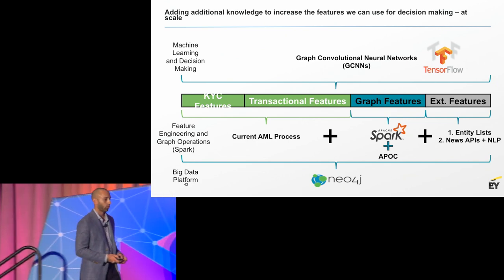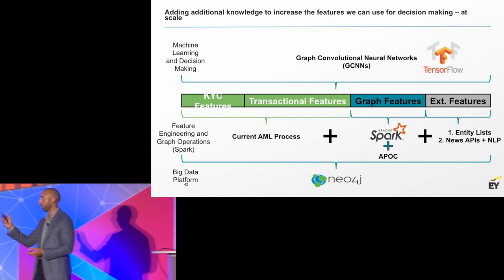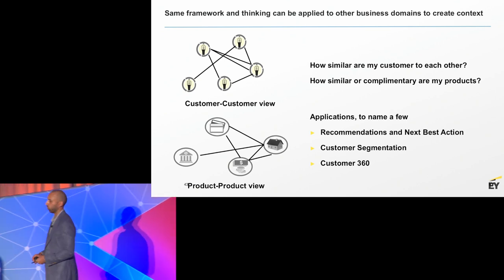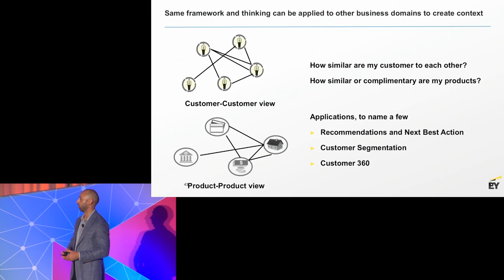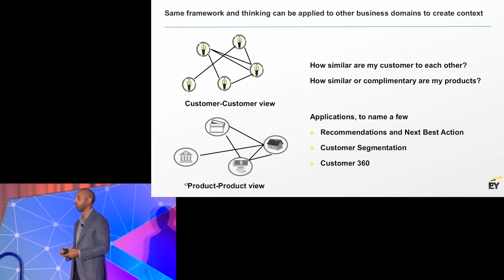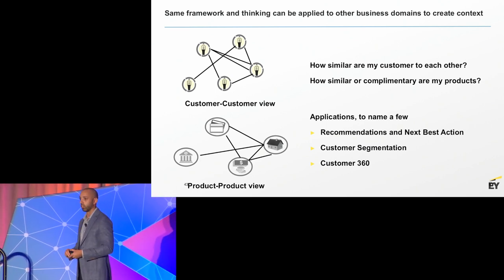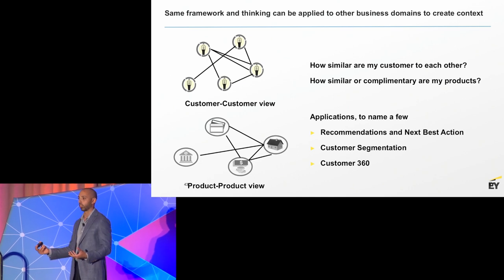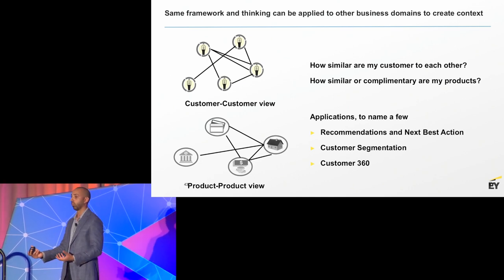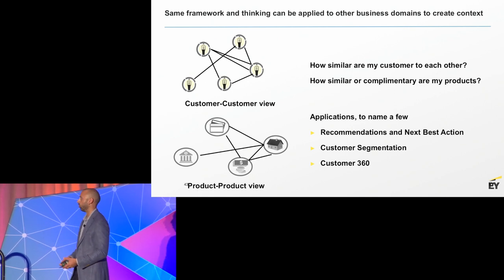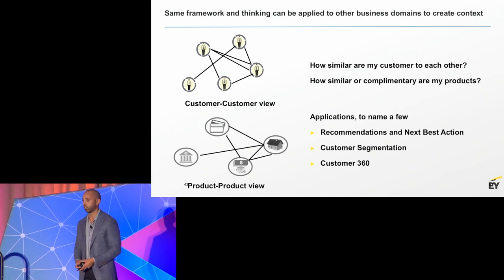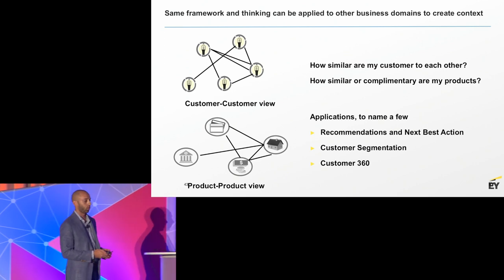This same line of thinking applies not just to transaction networks, but also to customer-to-customer networks or product-to-product networks. There's an entire topology of how your business actually is that most organizations haven't even started thinking about — and all of that can help you with recommendation engines and a whole slew of use cases.